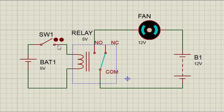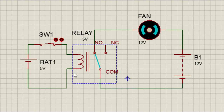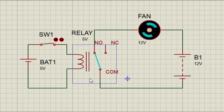In this typical demonstration, if I close switch one, then current will flow through the coil of the relay. This coil becomes a magnet and energizes the iron core, which in turn closes the normally open contact of the relay.